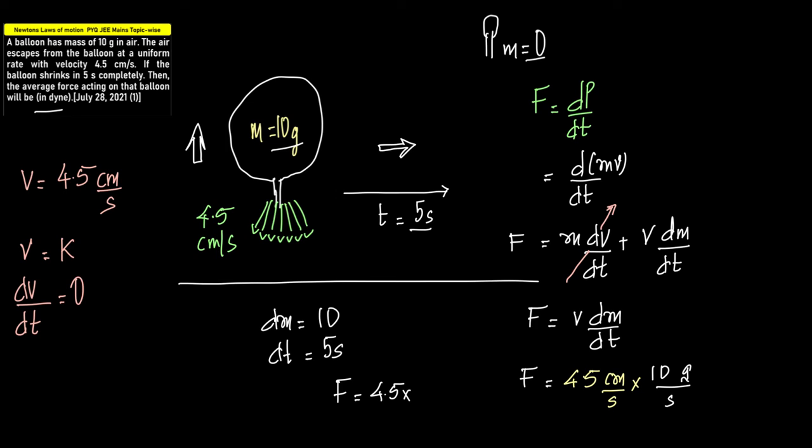5 seconds, so 10 by 5 is 2, into grams centimeters per second squared. What we get is F equals 9 grams centimeters per second squared.